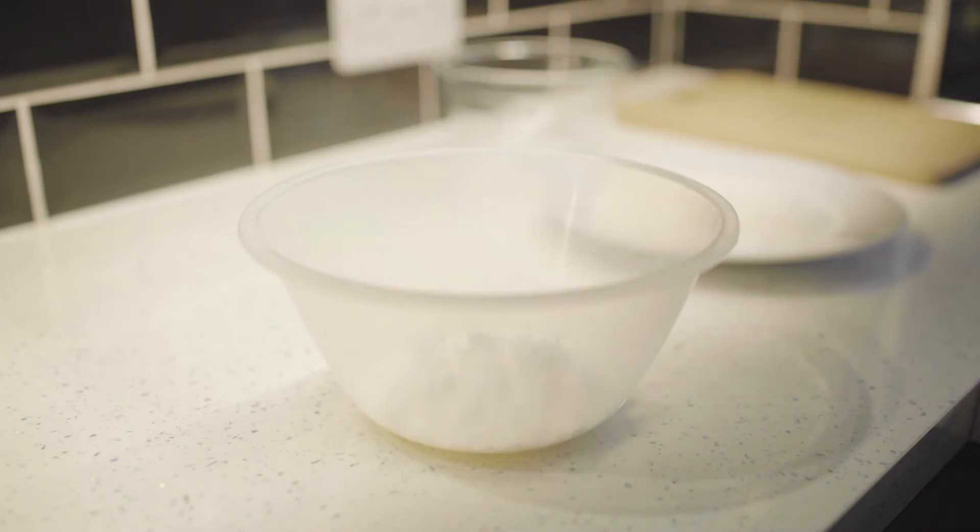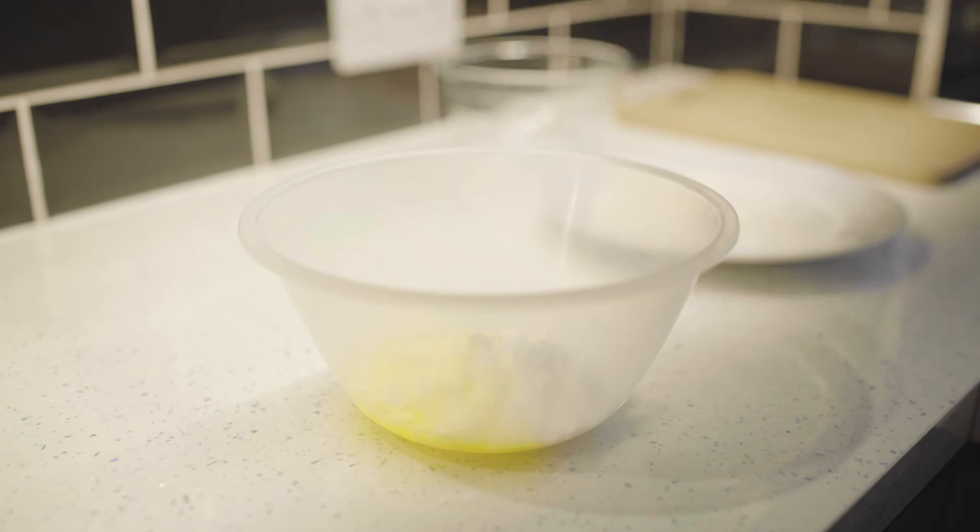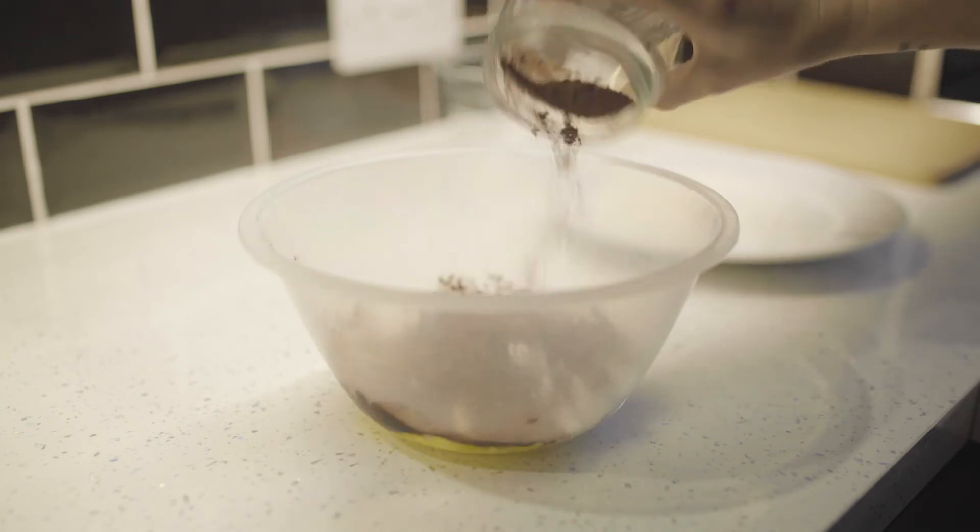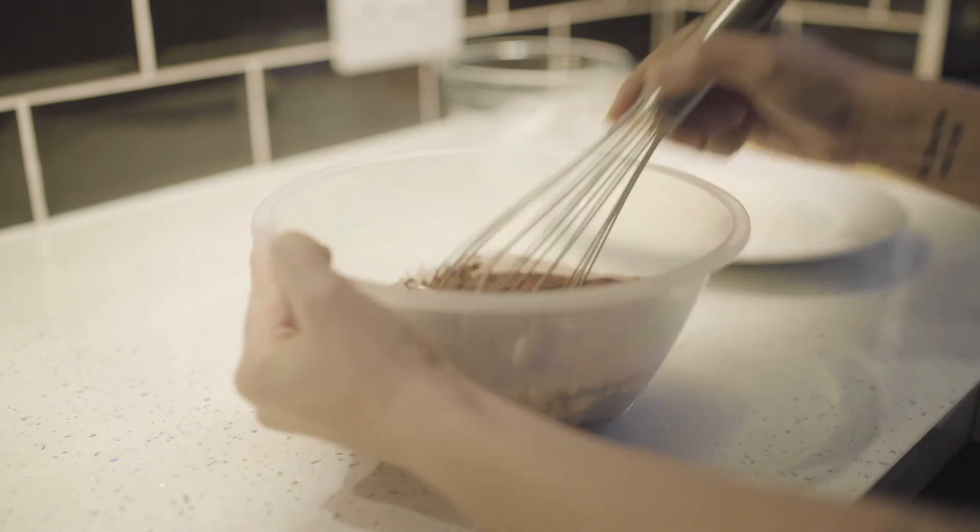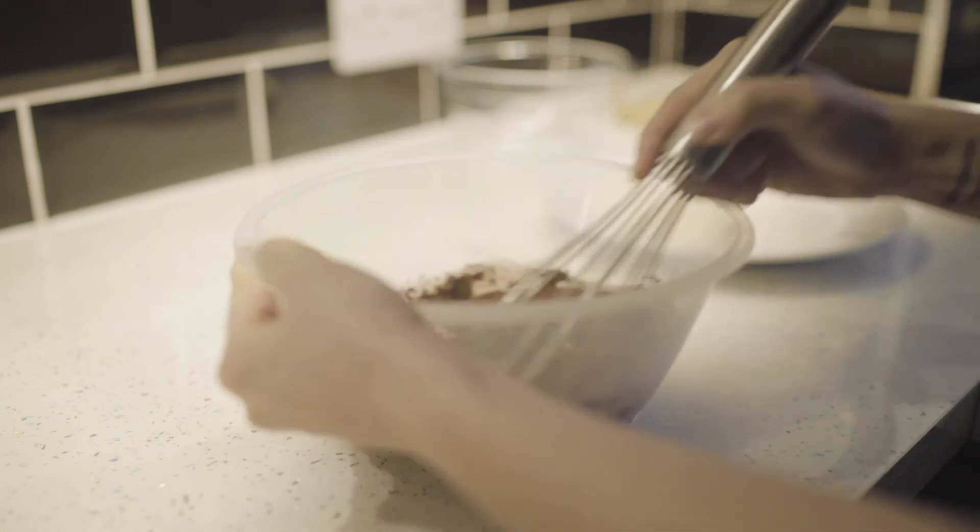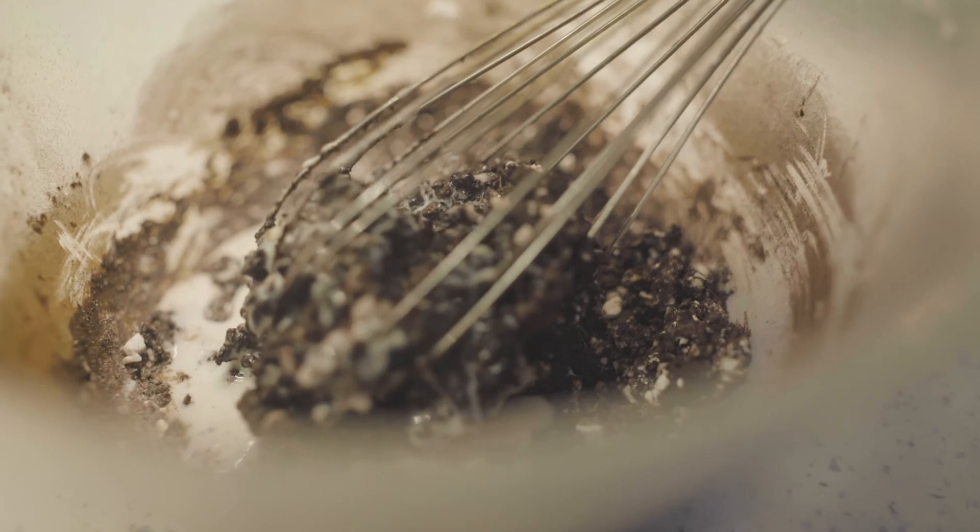We're going to make the chocolate one first. Add the icing sugar, melted butter and cocoa powder to a bowl and whisk that to combine. Once that's combined as best you can, add in the milk and mix until you've got a really smooth consistency. If it's still a bit thick you can add another quarter cup of milk. You want it to be quite a thin batter because if it's too thick it'll be hard to dip the sponges in.